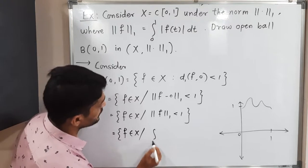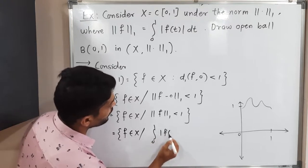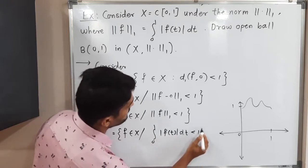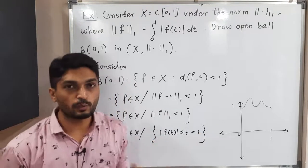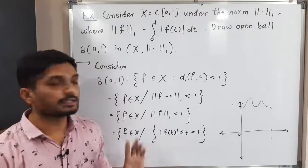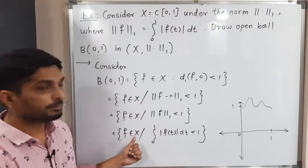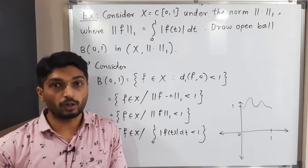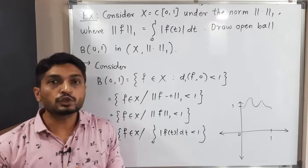By the definition of norm-1, this is equal to: F belongs to X such that the integration from 0 to 1 of |f(t)| dt is less than 1. So if the value of that integral is less than 1, and F is a member of X, then F will be a member of that open ball.